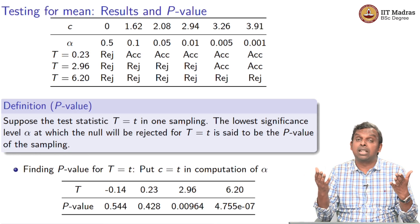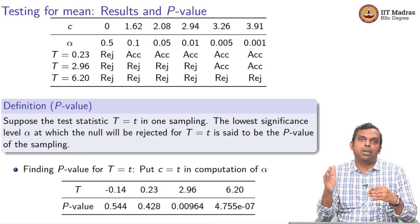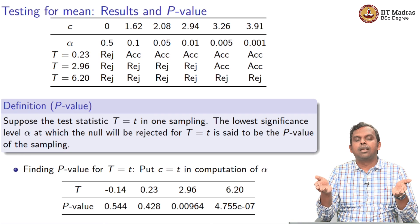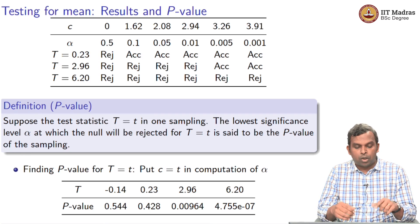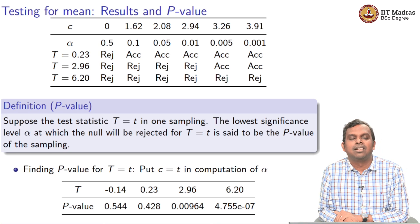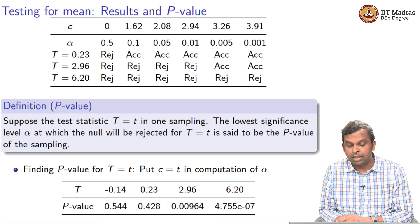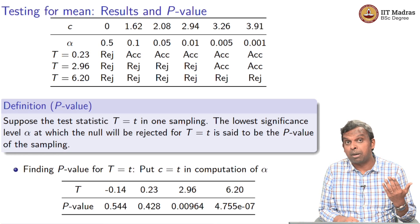How do you find the p-value for T equals t? Simply put C equal to T in the computation of alpha. Recall: alpha equals 1 minus F_C of (root(10) * C / 4) for the right-sided Z test — that is the formula we got. Whatever formula you get for alpha in terms of the critical value, simply substitute the critical value equal to the observed T value, and you will get the p-value. For example, if you get 6.2 as the observed sample mean, the p-value is 4.755 × 10^{-7}.